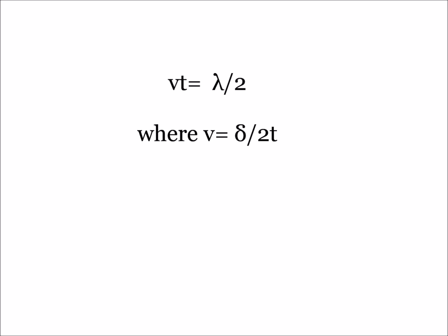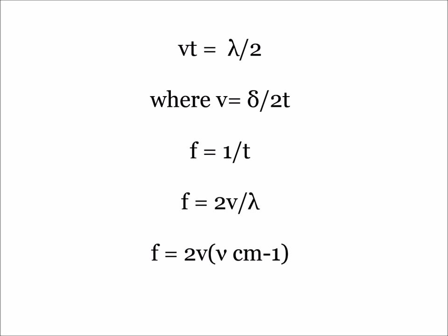The time t it takes for the mirror to move that distance at constant velocity v, where v equals delta over 2t, can be summarized by the following equation: v times t equals lambda over 2. The frequency of the signal is simply equal to 1 over t, which when solving the above equation for t and plugging it in, results in the equation f equals 2v over lambda.